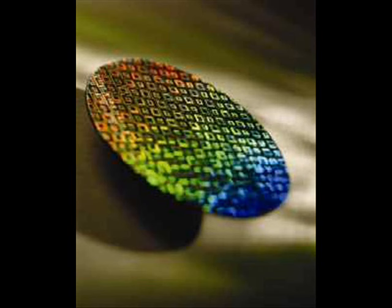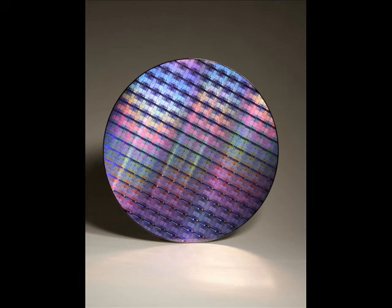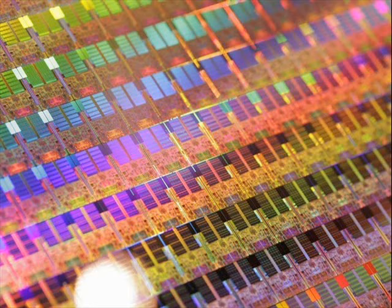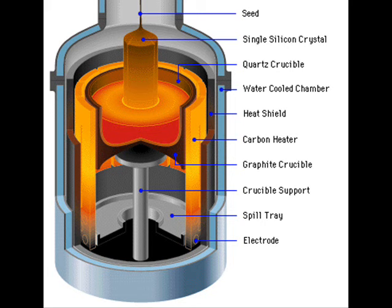A silicon wafer is a thin piece of semiconductor material used in the fabrication process of integrated circuits. There are two different methods used to grow an ingot of single crystal silicon, known as the Czochralski and Float Zone methods. The following is a summary of the steps in the Czochralski process of silicon wafer manufacturing.